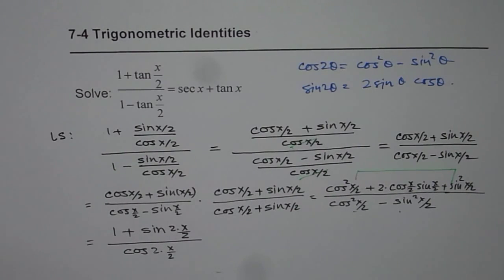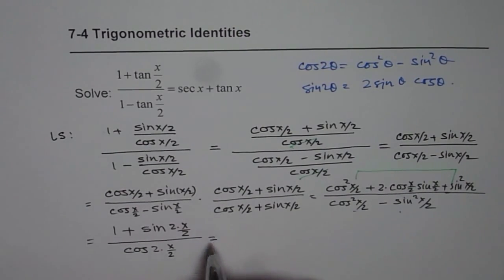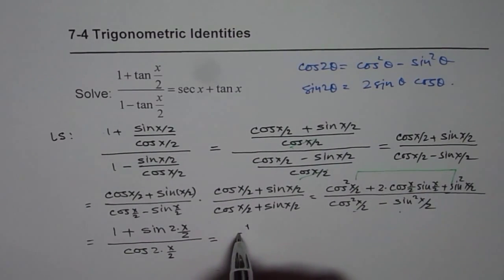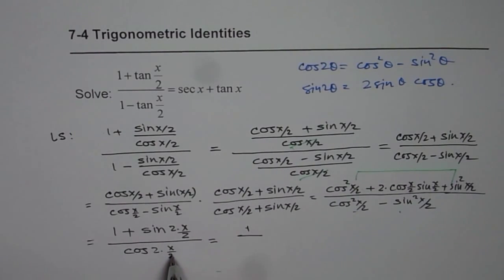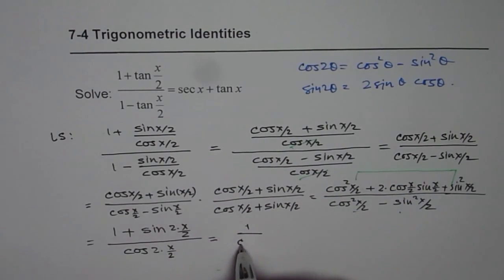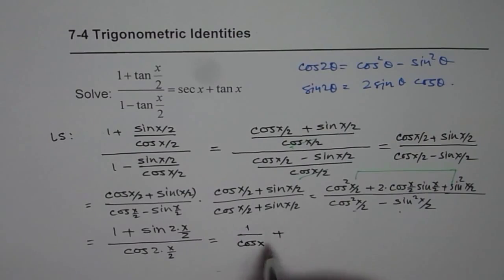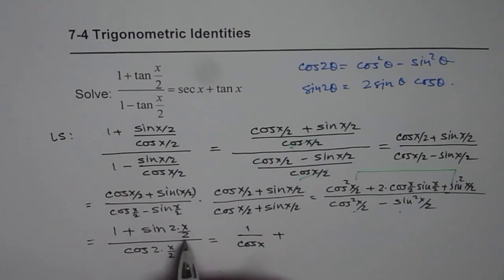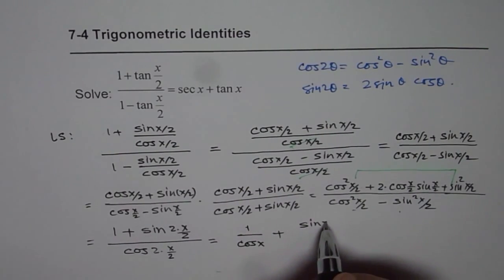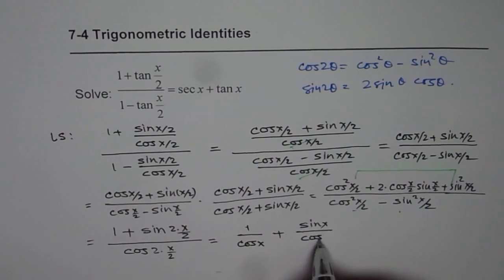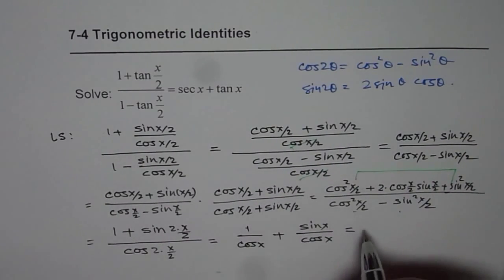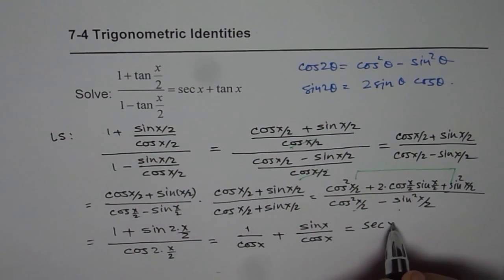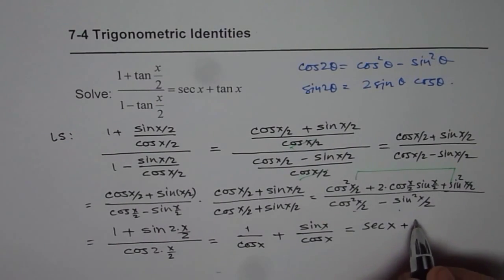From here we can write this as 1/cos(x) plus sin(x)/cos(x). 1/cos(x) is sec(x), and the other one is tan(x).